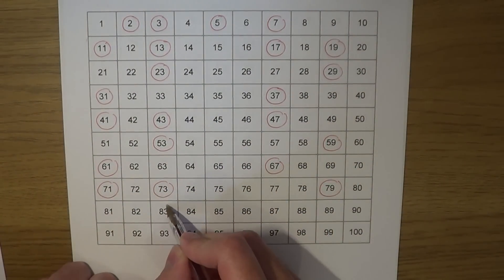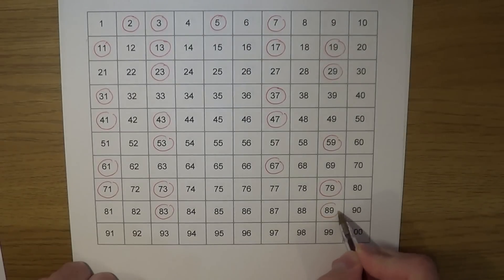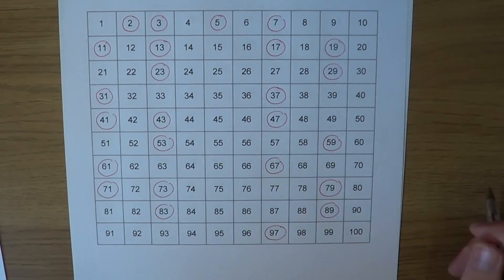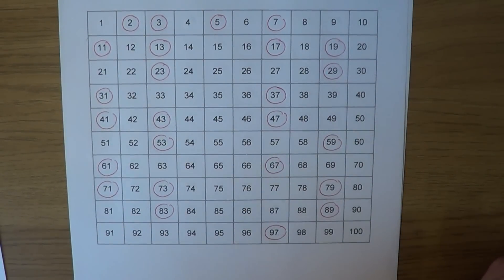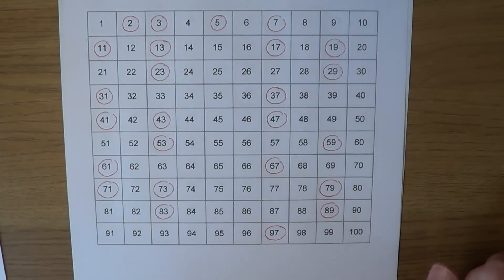83, 89, and one last one which is 97. You should notice that all together we have 25 prime numbers up to 100. Thanks for watching.